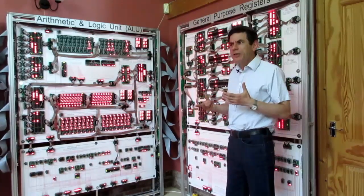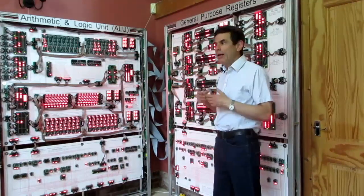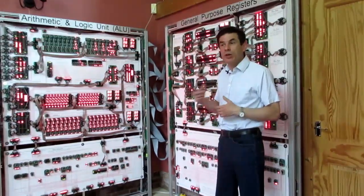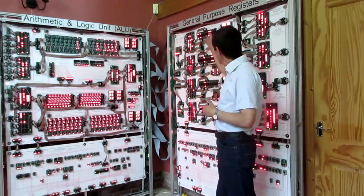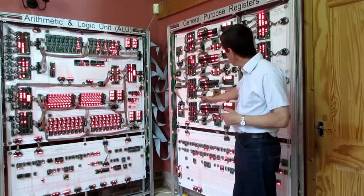So in a processor there are several functional blocks. One example is the registers, which are like a scratch pad for carrying out calculations. So these are the registers for the megaprocessor. We've got four of them here.